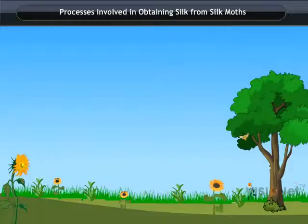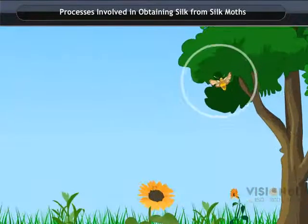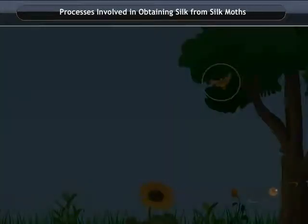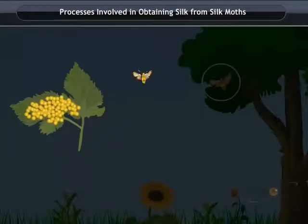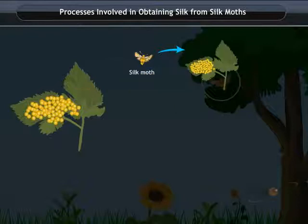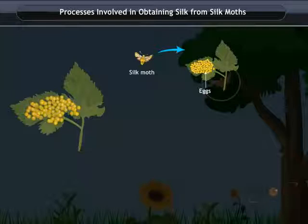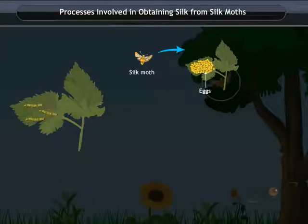Let us study the process of obtaining silk from silkworms. The female silk moth lays eggs on mulberry leaves, which are then transferred to a piece of paper or cloth. The eggs are stored under hygienic conditions at the required temperature and pressure for the larva to hatch.